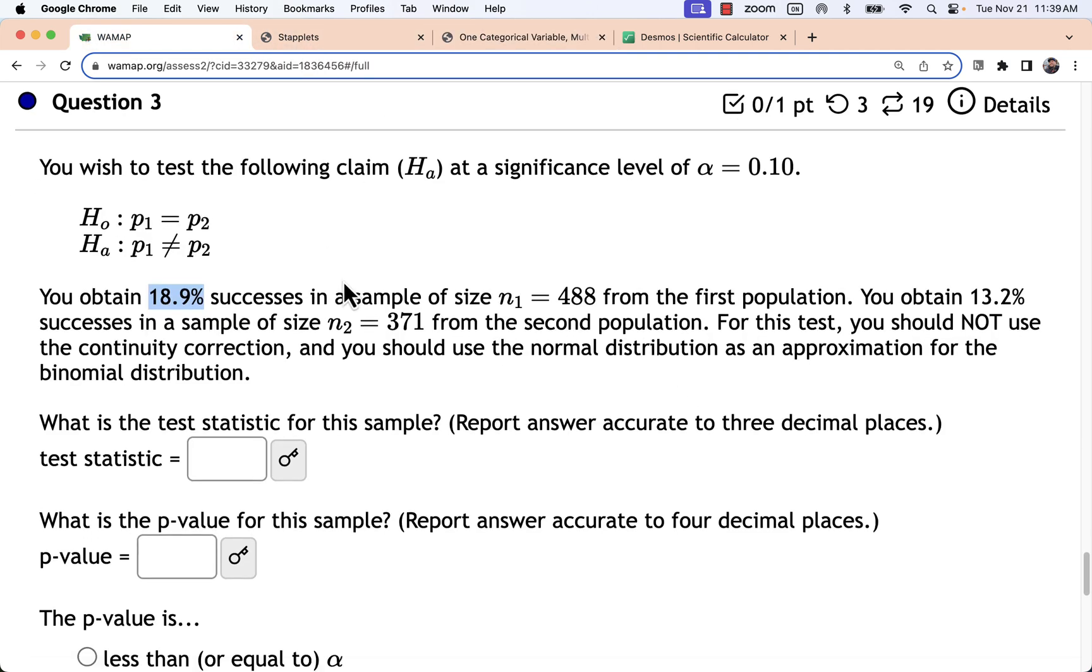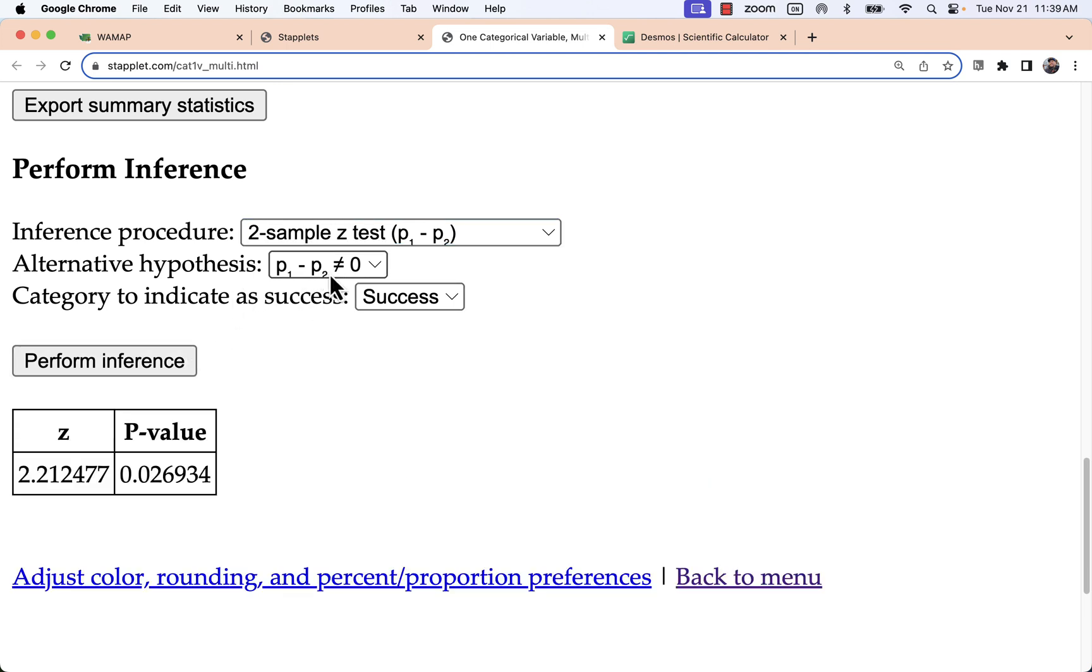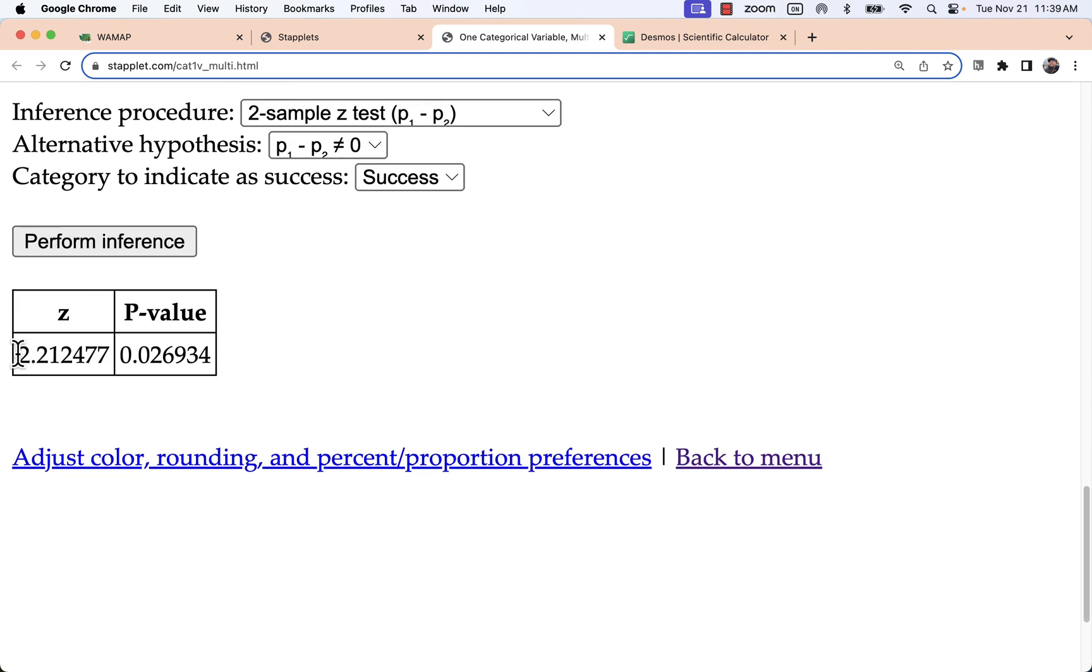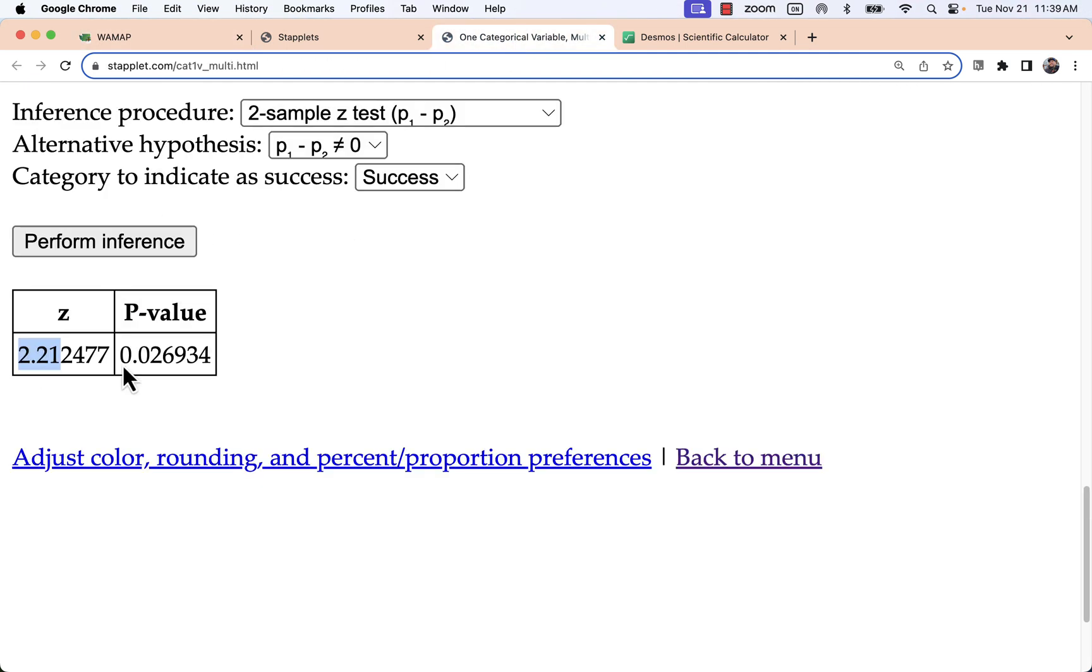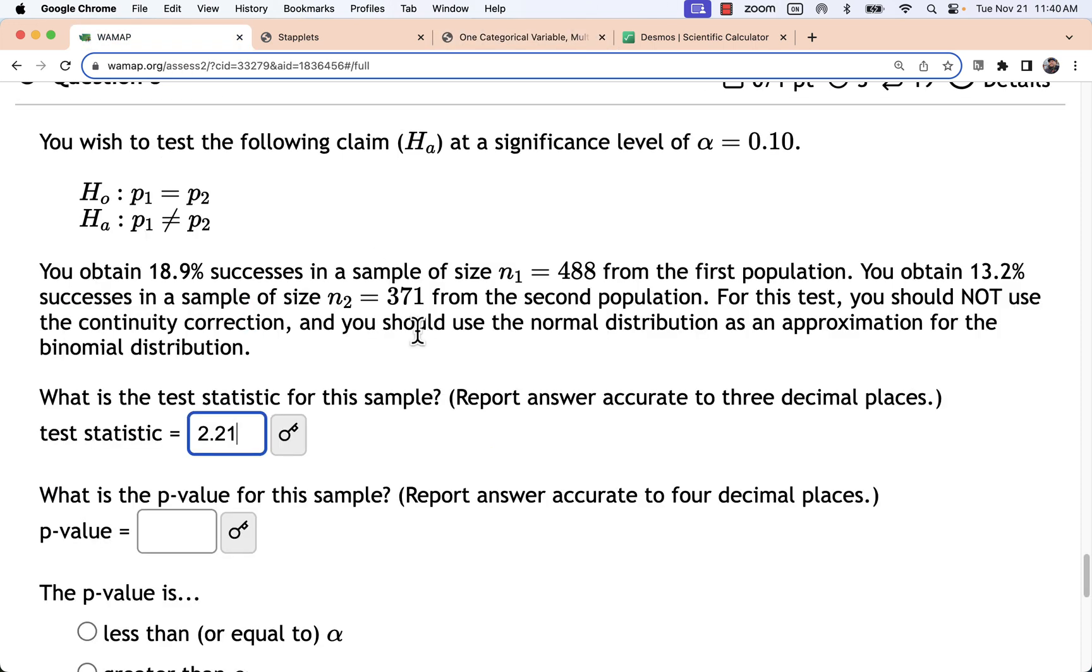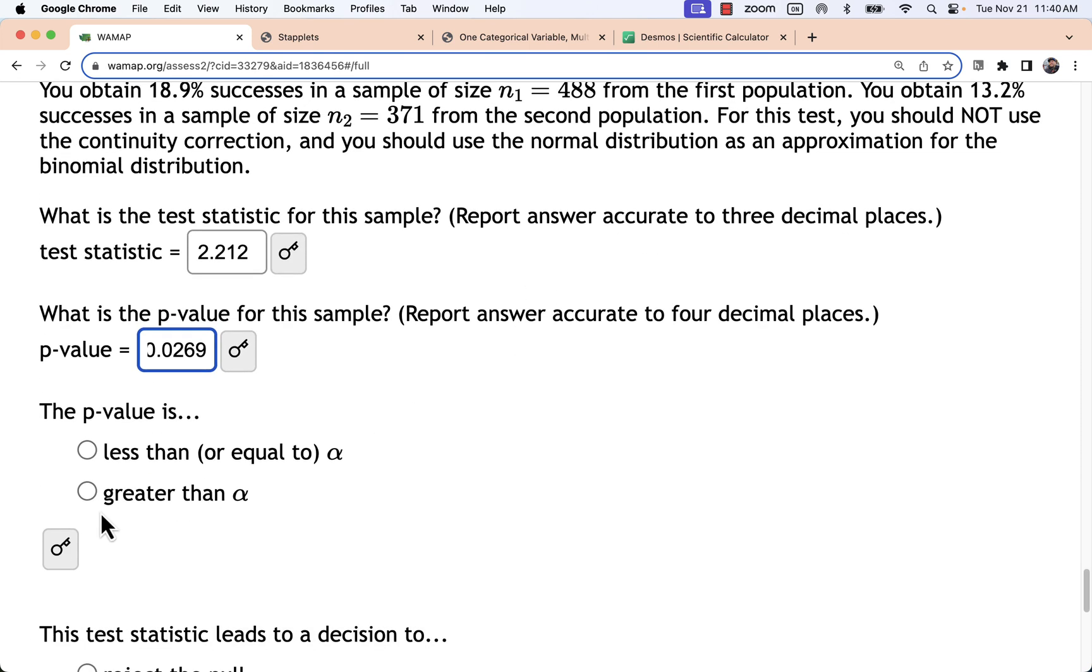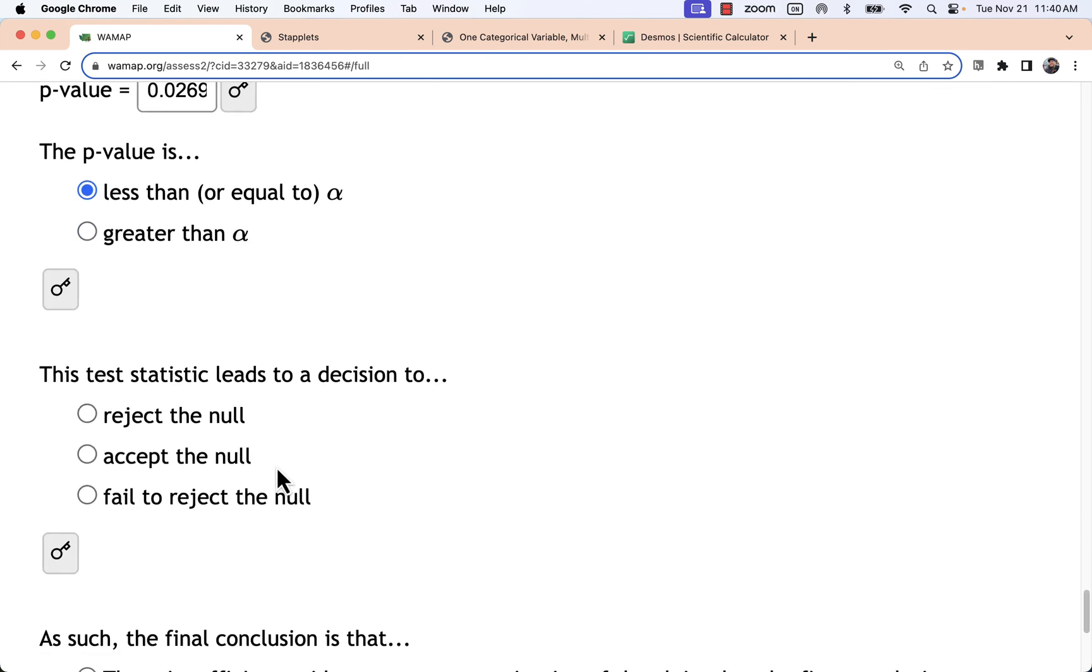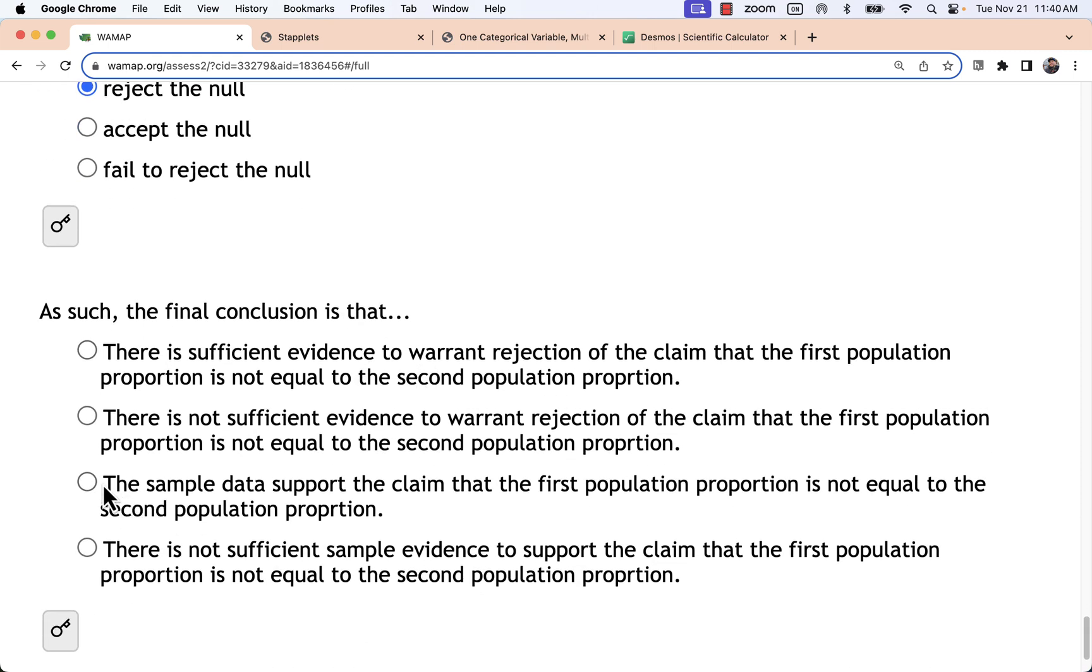And again I have a not equal sign. So that is a two tailed test not equal here. And I can look at my z score and my p value. In this case that p value is again less than my alpha. Which means I would reject the null. And I would support a claim that they're not equal. Again in this case just like that last problem.